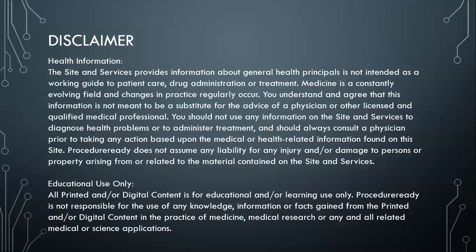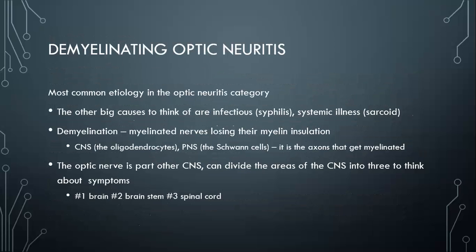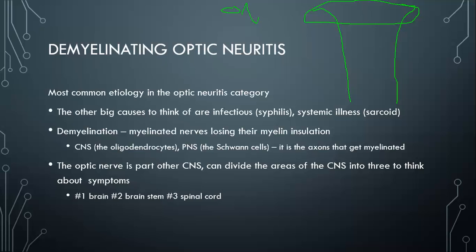Just to start out with optic nerve problems, in our minds we can group them this way. You can take right out from the top optic nerve head stuff, like papilledema, congenital disc problems, or different optic nerve head problems. That's one kind of group. And then you have the optic nerve itself, and you can divide optic nerve problems into two main groups: neuropathy and optic neuritis.